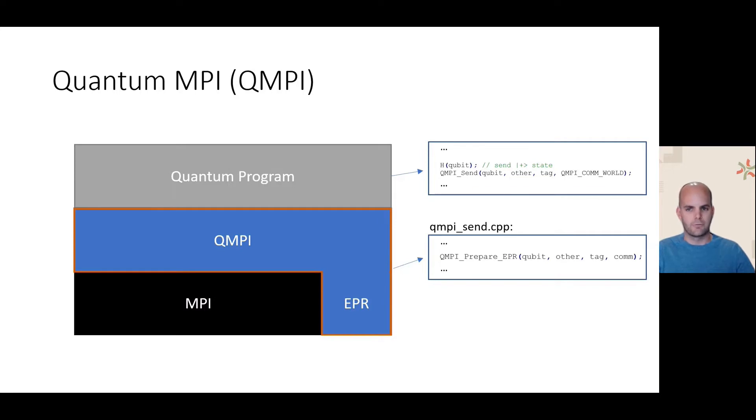And to program such systems, we propose quantum MPI. At a high level, programmers can use quantum MPI in their quantum programs. For example, qubits can be sent to another quantum node using the QMPI send function. Internally, QMPI then uses classical MPI functions for communicating classical data together with EPR pair generation, which can be done using the QMPI prepare EPR function.